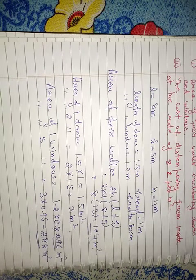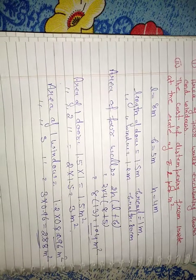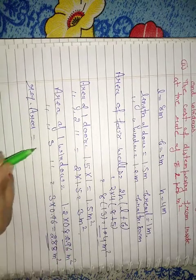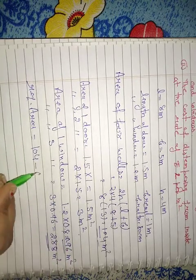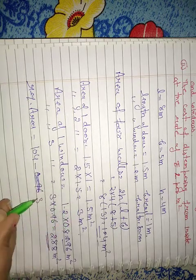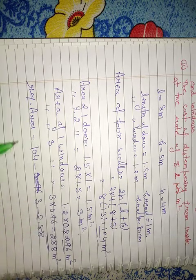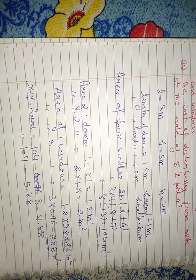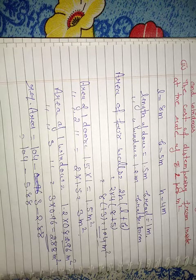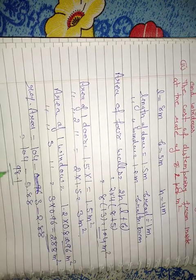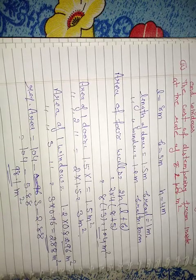Then we find the area of four walls excluding doors and windows. Required area equals total four wall area minus area of two doors minus area of three windows, which equals one hundred four minus three minus two point eight eight. That is one hundred four minus five point eight eight, which equals ninety eight point one two square meter.